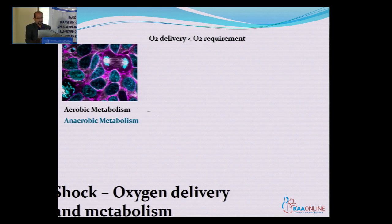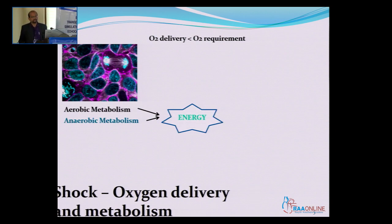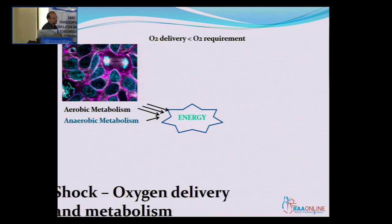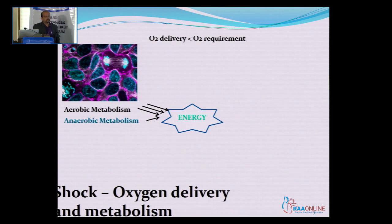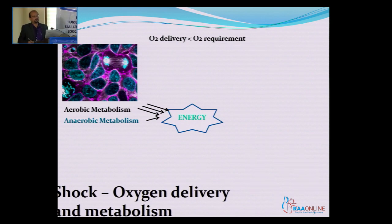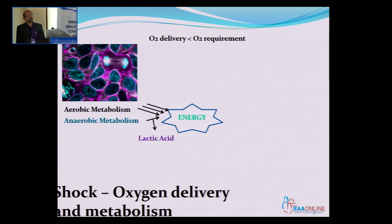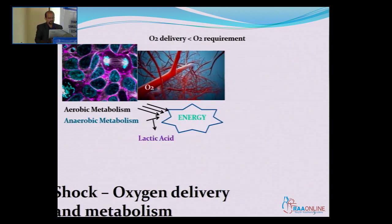Both aerobic and anaerobic metabolism eventually lead to the formation of energy, but the problem is that aerobic metabolism is a far more energy-efficient process. Aerobic metabolism results in the production of much more ATP than anaerobic metabolism. The second problem with anaerobic metabolism is that it results in the formation of a byproduct called lactic acid, which we will return to shortly.